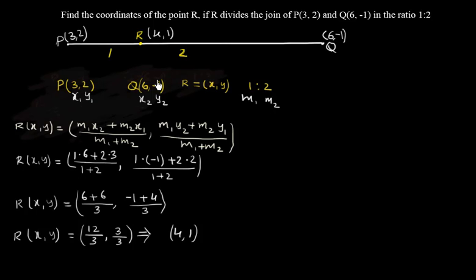In the ratio 1:2. So this is the way we use the section formula and find what is the point to divide in the given ratio. So this is the point R(4,1) which divides in the ratio 1:2 by joining the points P and Q. Thank you.